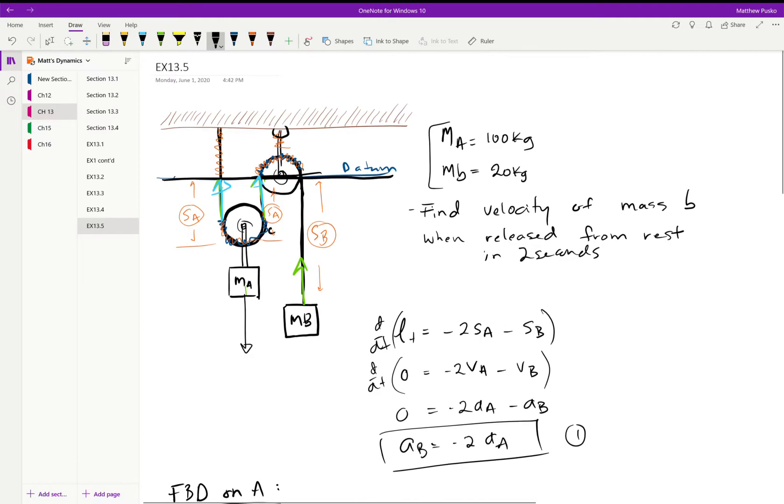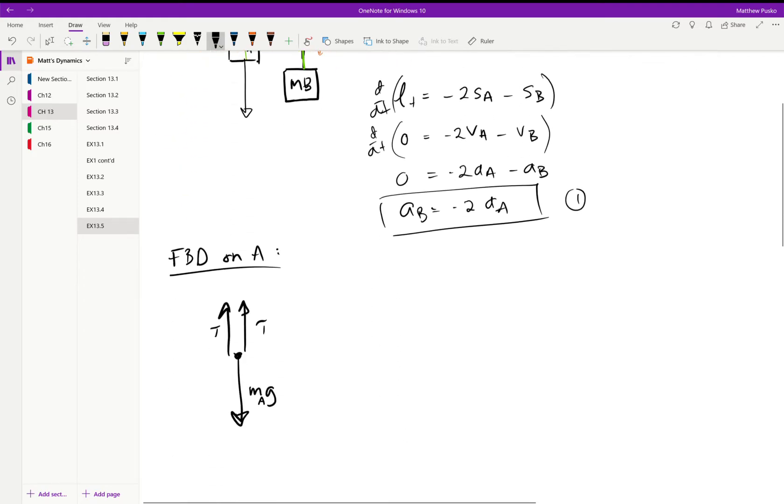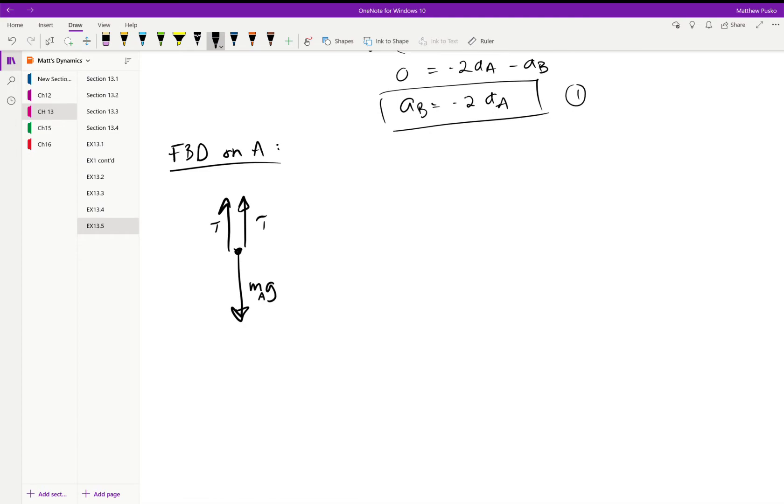In this problem we only have one string going throughout the whole problem. That means that every spot the tension is exactly the same. That is a fact assuming the pulley is massless and frictionless.